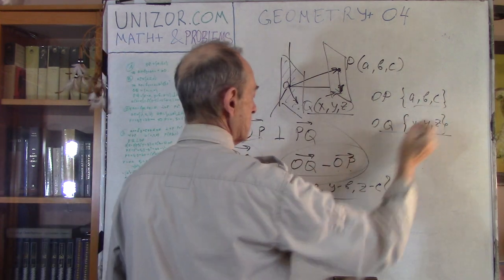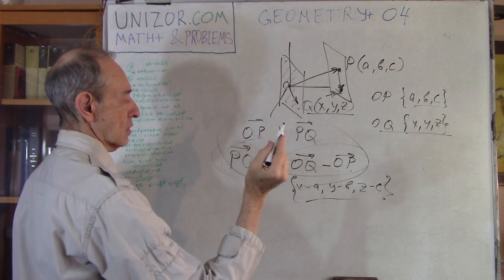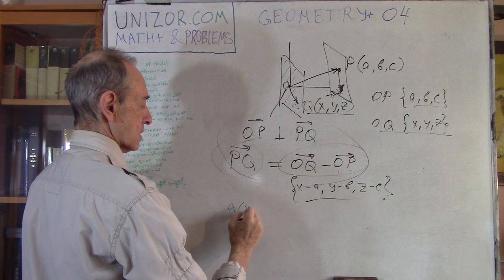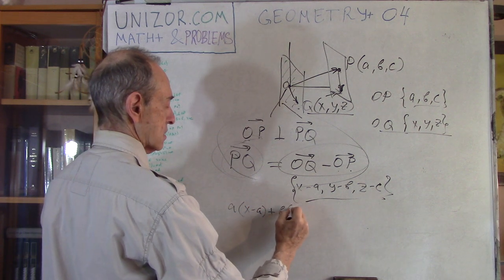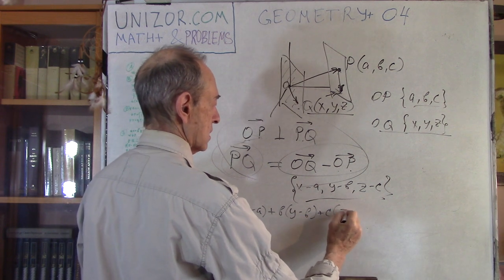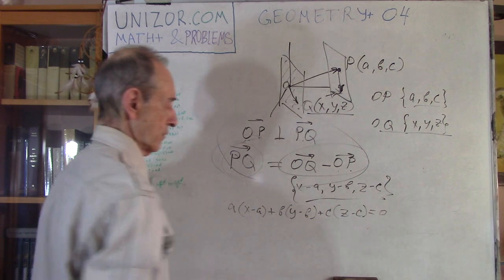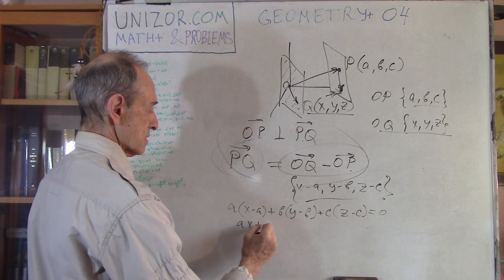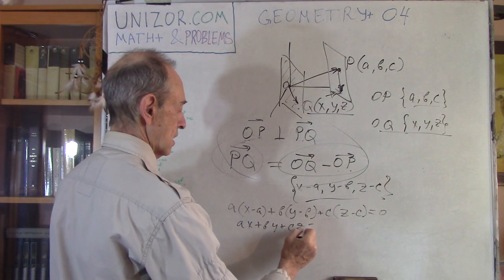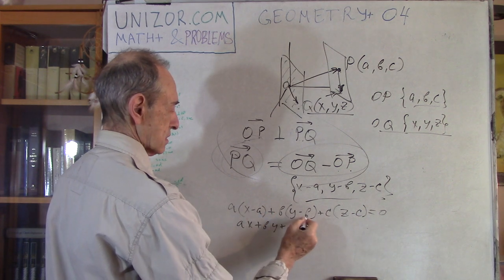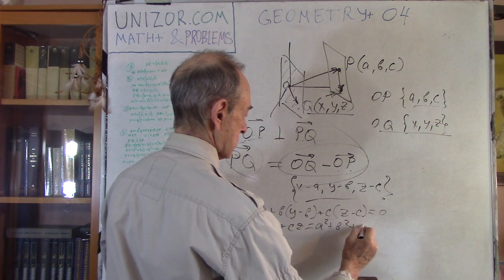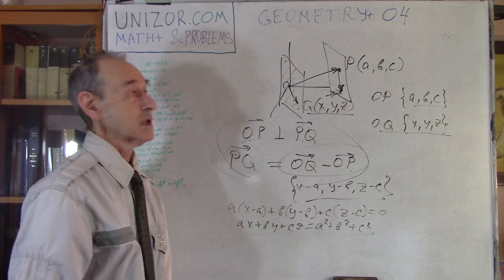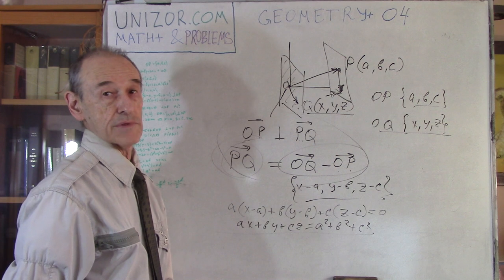OP is (A, B, C). The scalar product of OP and PQ is: A times (X minus A) plus B times (Y minus B) plus C times (Z minus C) equals zero. We can express this slightly differently as: Ax plus By plus Cz equals A² plus B² plus C². This is the equation of the plane which goes through the end of vector OP and is perpendicular to it.